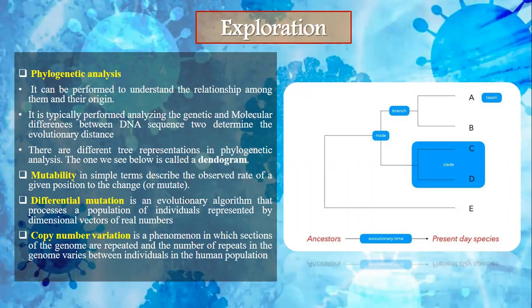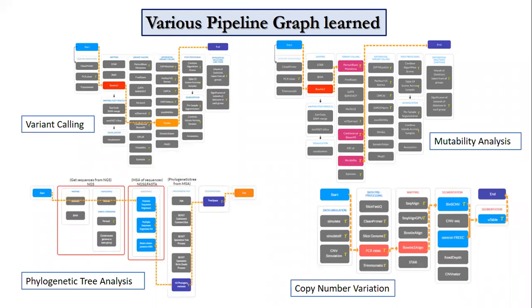There are different tree representations in phylogenetic analysis; the one shown in the picture is a dendrogram. Mutability describes the observed rate of a given position to change or mutate. Differential mutation is an evolutionary algorithm that processes a population of individuals represented by dimensional vectors of real numbers. Copy number variation is a phenomenon in which sections of the genome are repeated and the number of repeats varies between individuals. The various pipelines run for analysis are: variant calling, mutability analysis, phylogenetic tree analysis, and copy number variation. In our project, we will focus on phylogenetic tree analysis.